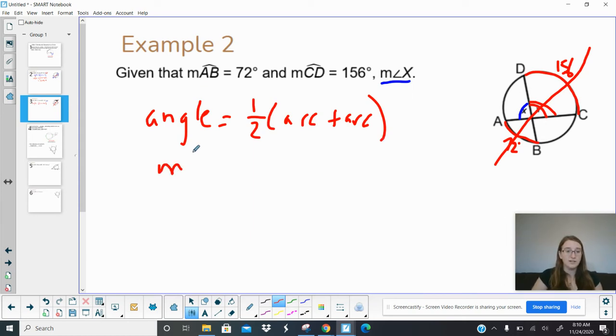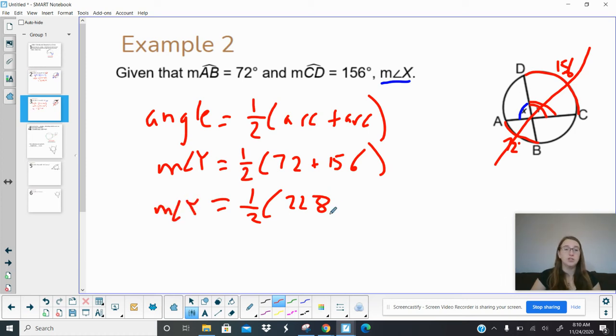Okay, so our angle that we're trying to find, measure of angle Y, equals 1 half. We know the two arcs. We just got to do some math. 72 plus 156. I get half of 228, which means that angle Y, once again guys, be good geometry students and realize we're not done with the question, is 114. So I'm going to go ahead and come back up to my picture and put that in the picture, and hopefully we'll realize something here.